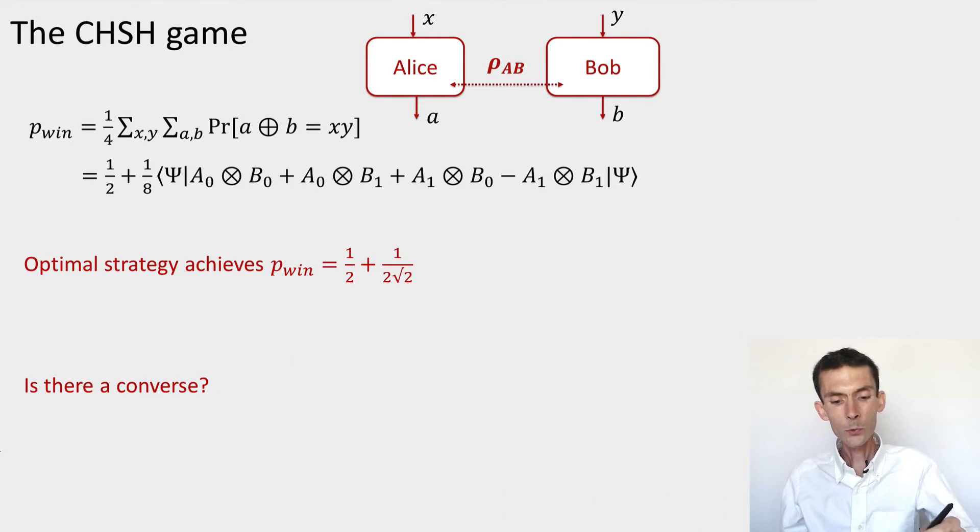Let me remind you of the CHSH game first. This is a game played between two parties, Alice and Bob. Alice is provided an input X in {0,1}, Bob is also provided an input Y in {0,1}. These two parties may share an entangled state rho_AB that I have no information about. Depending on their input, they each perform an arbitrary measurement on their share of the state and obtain outputs A in {0,1} and B in {0,1}.